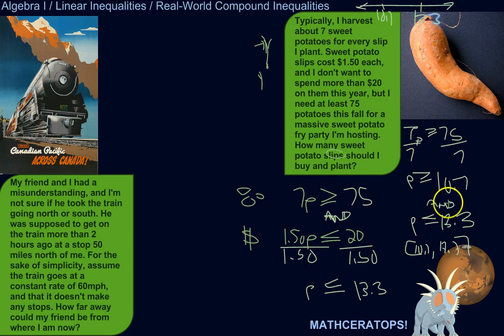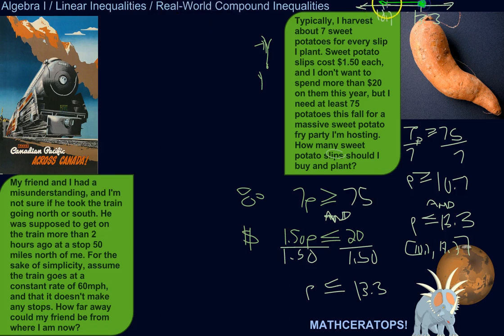It needs to be less than or equal to 13.3 and greater than or equal to 10.7 — so this is my solution set. All said and done, I need to plant somewhere between 10.7 and 13.3 potato slips — let's say 11 or 12, probably 12.